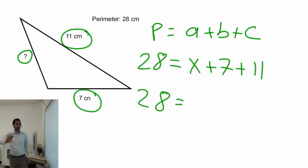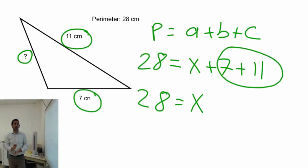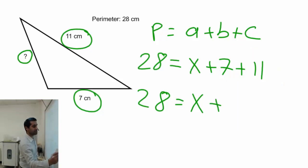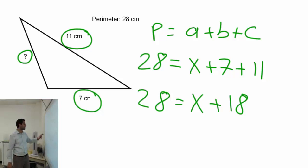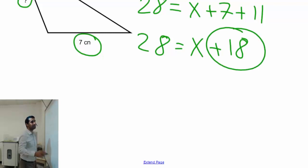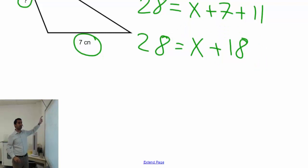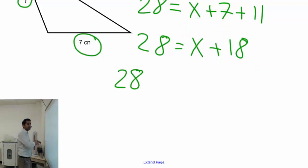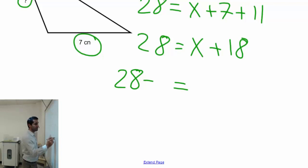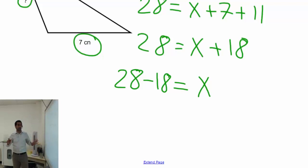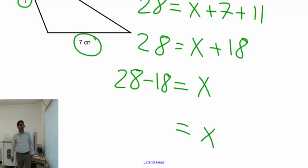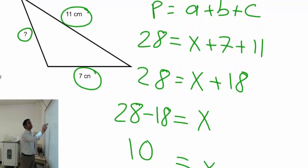So we have 28 equals x plus 7 plus 11. Combining like terms on the right side: 7 plus 11 equals 18, giving us 28 equals x plus 18. To isolate x, move 18 to the other side as minus 18: x equals 28 minus 18, which is 10. The unit is centimeters, so x equals 10 cm.